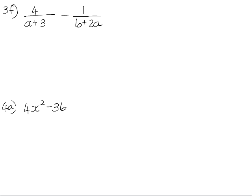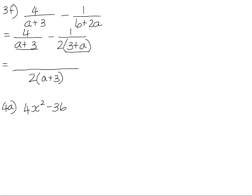Question 3f. We need to add these fractions, so we need to find the lowest common denominator. Remember to make sure that all of your denominators are fully factorized before you choose your LCD. 6 plus 2a has a common factor of 2, so that leaves us with 3 plus a. Now, a plus 3 and 3 plus a are the same thing because addition is what we call a commutative operation. In other words, it doesn't matter which way around your numbers are. The answer is the same. So our LCD will be 2 into a plus 3.